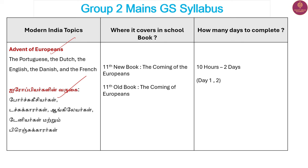This is our new book. The 11th new book covers 'Coming of the Europeans' and the 11th old book also covers 'Coming of the Europeans.' If you refer to the old book, there is no standard content in the old book. So if you have the new book, you can add the old book's extra information. There is standard content in the old book.